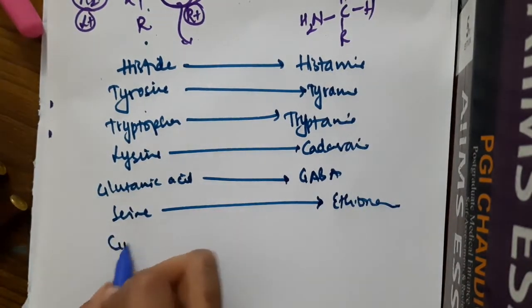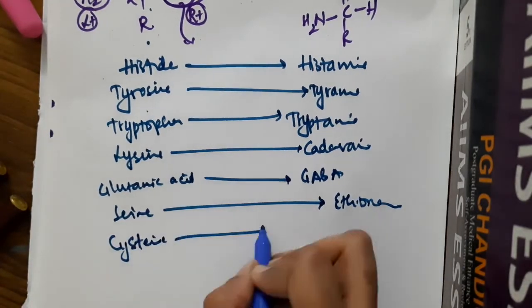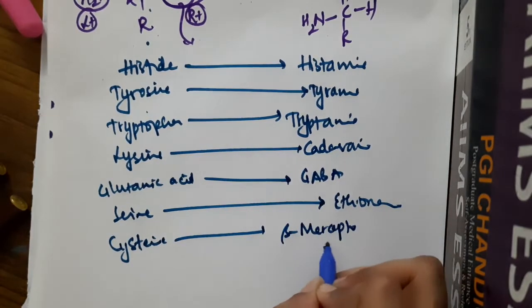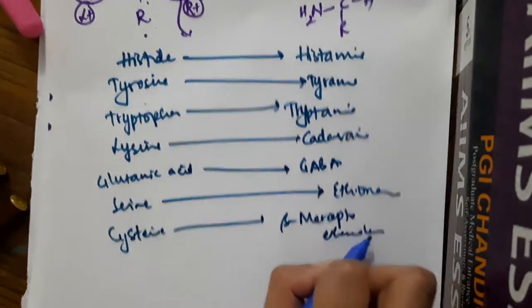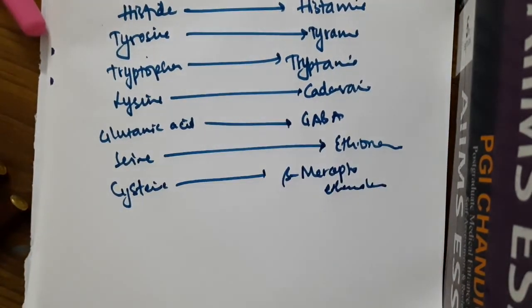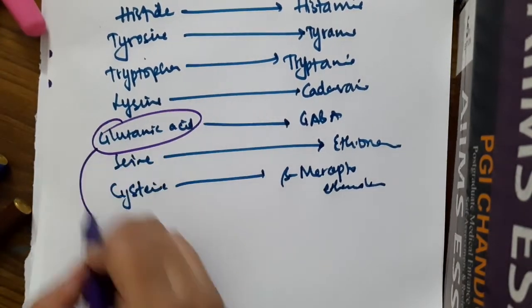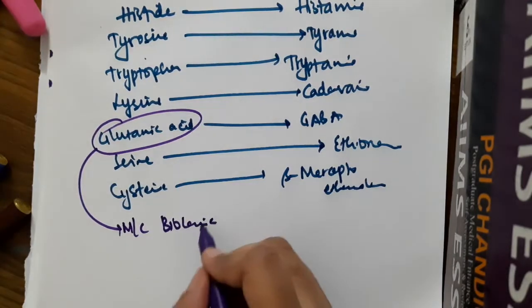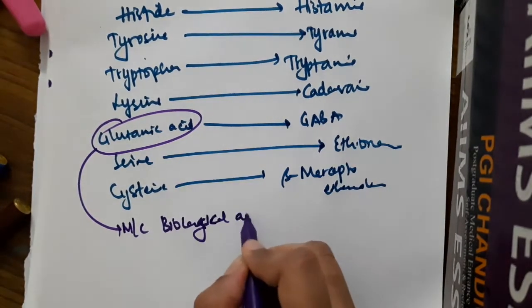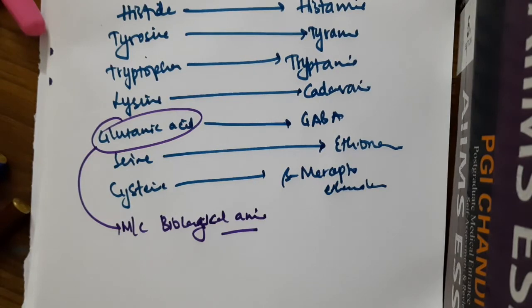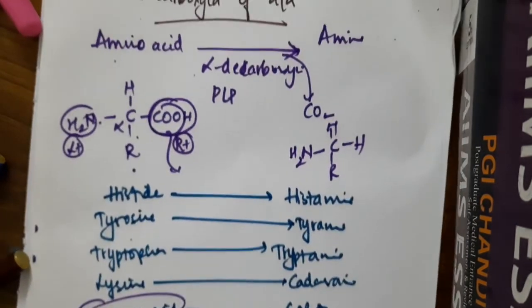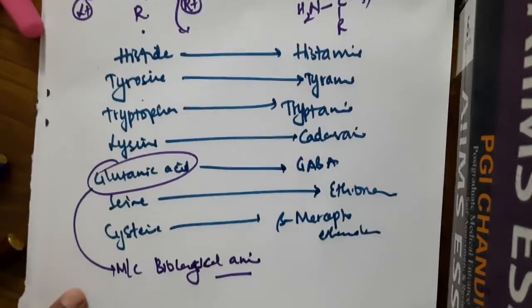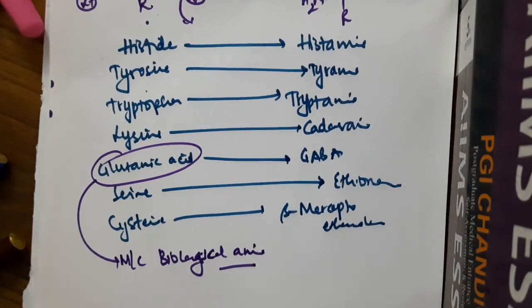Among all this, glutamic acid is the most common biological amine. This is decarboxylation of amino acid. Thank you guys for watching my lecture.